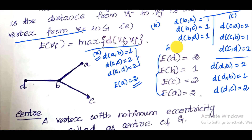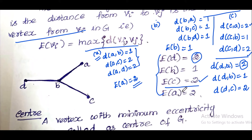Eccentricity of C — the longest distance from C to A is 2. Eccentricity of D — D's longest distance. Eccentricity of B: the farthest distance — A to C, A to D, A to D distance is 2. Maximum distance is 2.